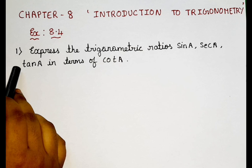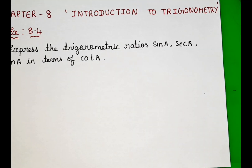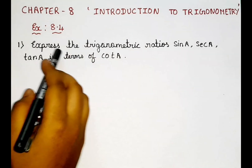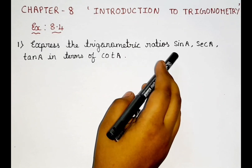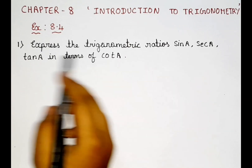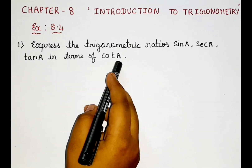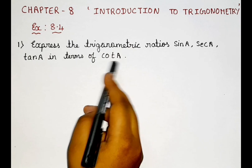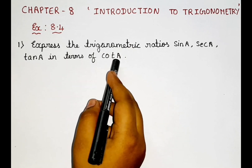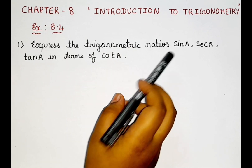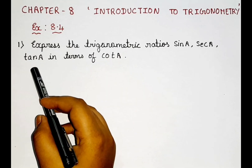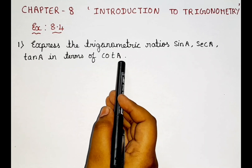Now let's read the question. The first question is: express the trigonometric ratios sin A, secant A, and tan A in terms of cot A. So here, what is the meaning of 'in terms of cot A'? We have sin A, secant A, and tan A, and we have to convert them into cot A.